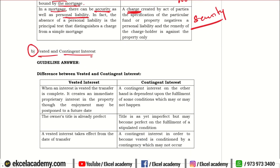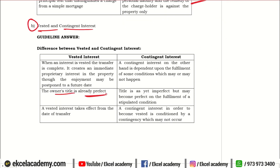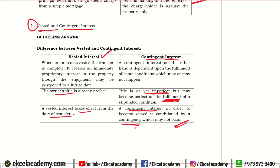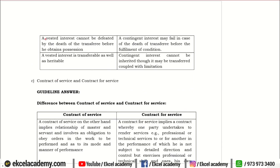Moving to the second distinction: vested interest versus contingent interest. Three points of difference. In vested interest, the owner's title is already perfect; in contingent interest, the title is not yet perfect — it is imperfect, and only after the conditions are fulfilled will it become perfect. A vested interest takes effect from the date of transfer, whereas contingent interest will take effect only on the date the contingency or condition is fulfilled. Vested interest cannot be defeated by death of the transferee, whereas contingent interest can fail if, before the fulfillment of the condition, either the transferor or the transferee dies. Vested interest is transferable as well as heritable, whereas contingent interest is not heritable and cannot be transferred.